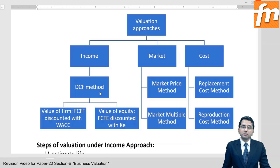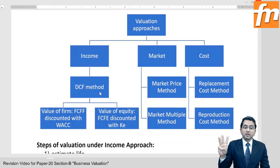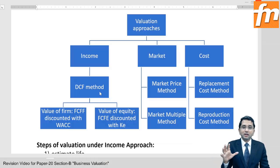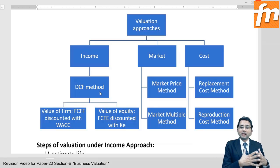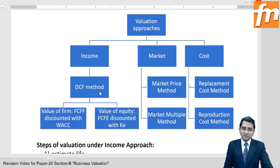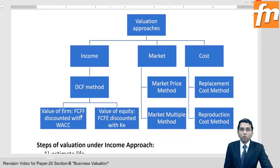Valuation of the whole firm is also named enterprise value. The firm includes equity shareholders plus preference shareholders plus financers — that is loan providers. All these people who fund the company together are named as the firm or the enterprise. If you have to make valuation of the firm, then free cash flows available to the firm — FCFF — are discounted with the weighted average cost of capital.